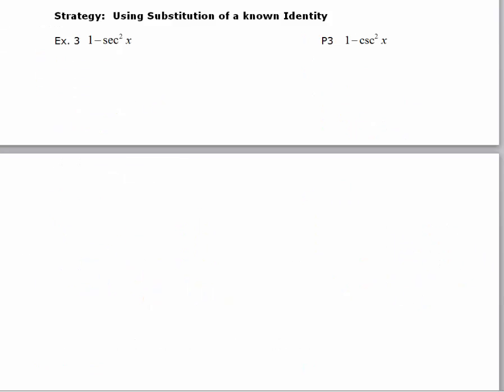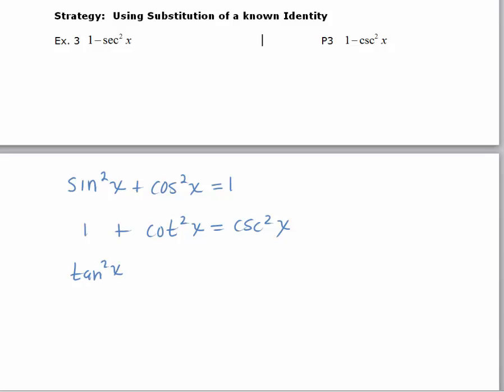The next strategy is to use substitution of a known identity. We'll start with the three Pythagorean identities as a refresher. The first is sine squared plus cosine squared equals 1. Dividing through by sine squared gives 1 plus cotangent squared x equals cosecant squared x. Dividing through by cosine squared gives tangent squared x plus 1 equals secant squared x.